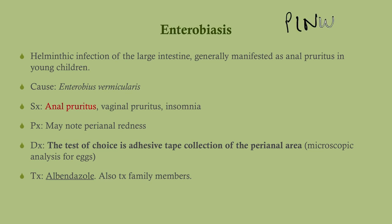Enterobiasis, also called pinworm, is a helminthic infection that usually happens in young kids. It will come up on your exam as a five-year-old whose butt itches, and often siblings — and sometimes parents — are itching too. It is associated with poor hygiene but doesn't have to be, and it comes in outbreaks. The cause is Enterobius vermicularis. The major symptom is anal pruritus; girls and women can have vaginal pruritus, and insomnia can occur because symptoms worsen at night.